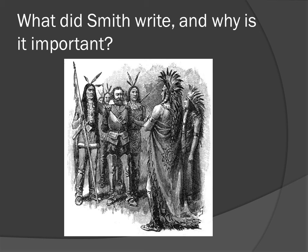In 1616 he published A Description of New England, based on his voyage of 1614. It includes the myth of Pocahontas. In 1624 he published The General History of Virginia, his longest and most influential work. It served as propaganda advertising lands he had explored in the New World as a land of freedom, joy, and abundance.